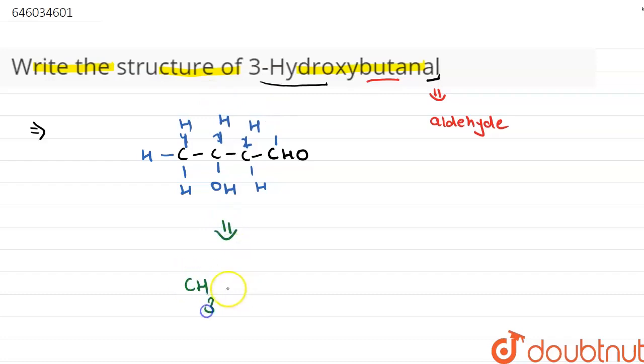And we can also write it like this. Here we have CH3, here we have CH, here we have OH, CH2, C double bond O, and there is a H. So this is the structure of 3-hydroxybutanal. So this is our answer.